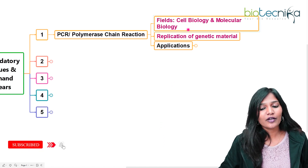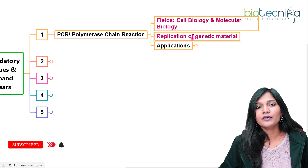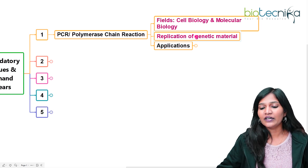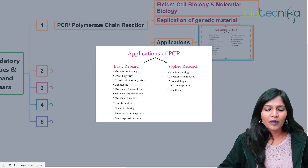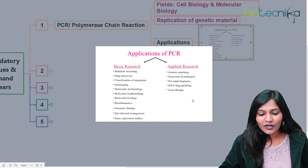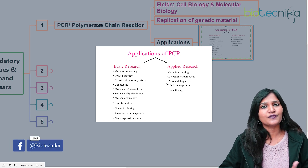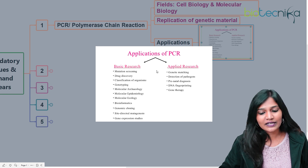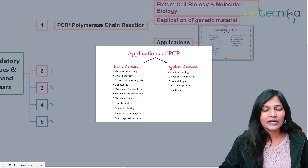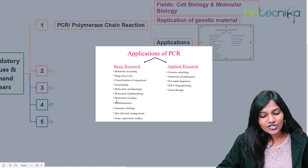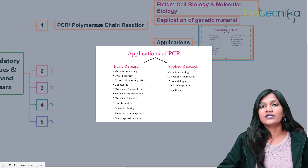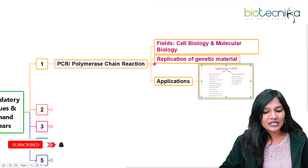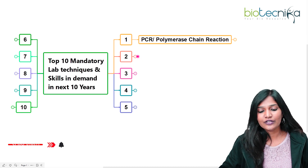PCR is used in cell biology and molecular biology. The main purpose of polymerase chain reaction is to replicate genetic material under laboratory conditions. It is used for basic and applied research, and is very useful in the medical field — for DNA fingerprinting, gene therapy, genomic cloning, genotyping, drug discovery, and mutation screening. This is something everybody definitely needs to know.